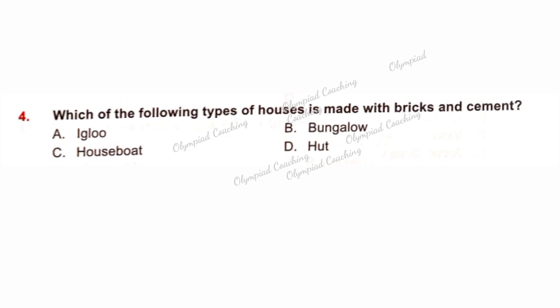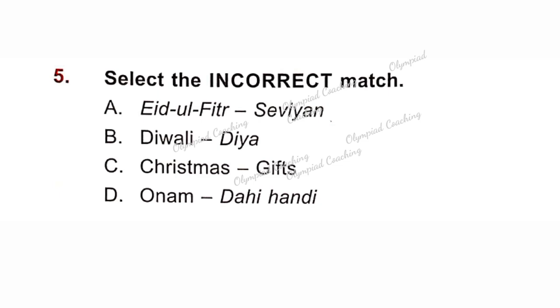Question No. 4: Which of the following types of houses is made with bricks and cement? Option B is correct — Bungalow. Question No. 5: We celebrate Diwali with diyas and crackers. Option C is Christmas — on the occasion of Christmas we offer gifts and sweets to each other. Option D is Onam. This is an incorrect match because Dahi is associated with Krishna Janmashtami, not Onam. So option D is correct as it is an incorrect match.